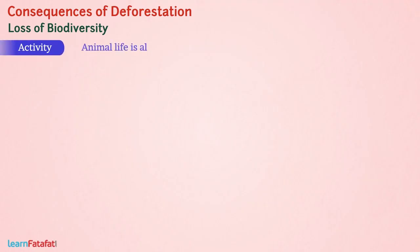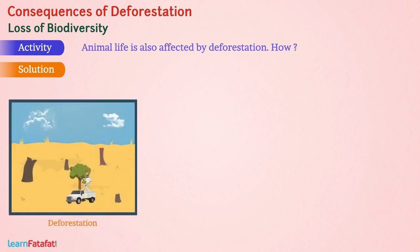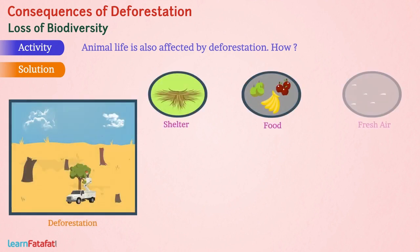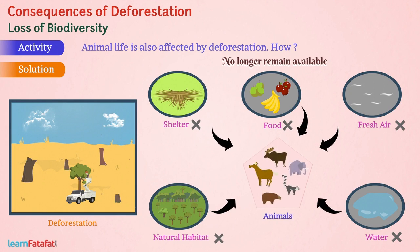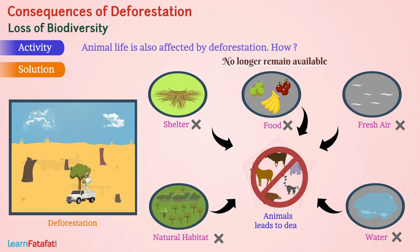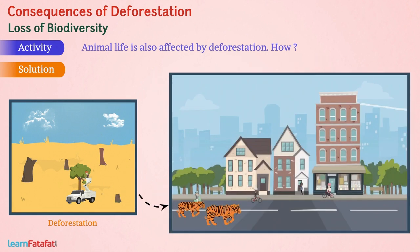Animal life is also affected by deforestation. Due to deforestation, shelter, food, fresh air, water, and natural habitat no longer remain available for animals. In adverse conditions, animals could not survive, leading to their death. Many animals enter villages and cities to get resources for their survival, and the conflict between humans and animals causes serious destruction to both.